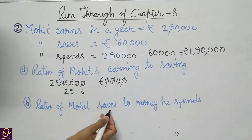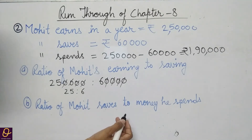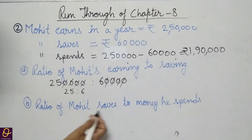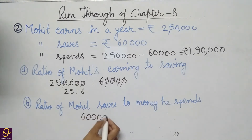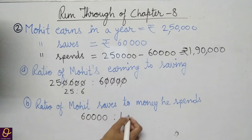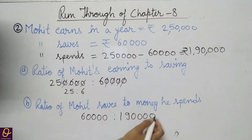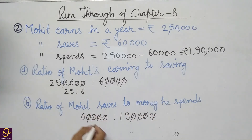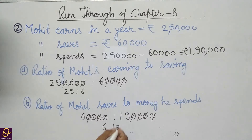Part B: ratio of Mohit's savings to money he spends. Savings is 60,000 and he spends 1,90,000. Cancelling the four zeros, the ratio is 6 is to 19.